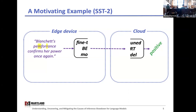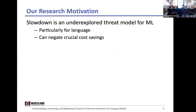In our work, we are aiming to better understand what causes slowdown in the language domain. This is motivated by the fact that the concept of the slowdown attack is new and underexplored in general, but particularly for text, where it's especially important to understand because in practice, large language models are very expensive and computationally costly. A variety of methods have been proposed to alleviate these costs, but slowdown attacks can render these cost-saving methods completely useless.